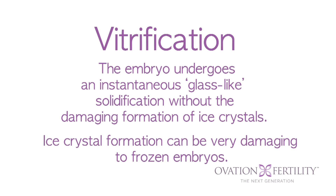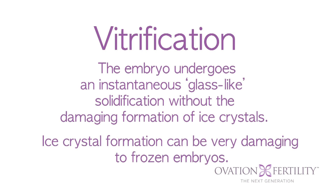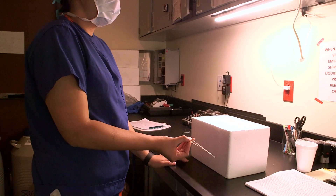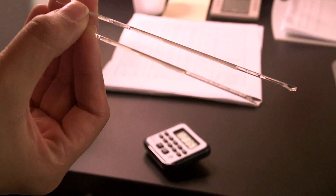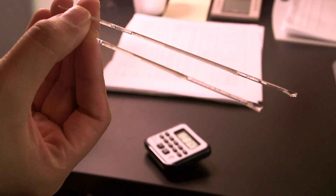Ice crystals, if they do form, would harm the cells and potentially lyse or destroy the cells. If a crystal of ice were to form across a membrane of a cell, it would disrupt that membrane and essentially kill or lyse it.